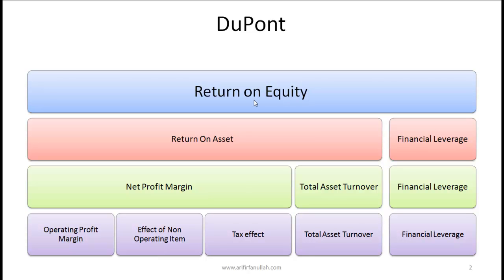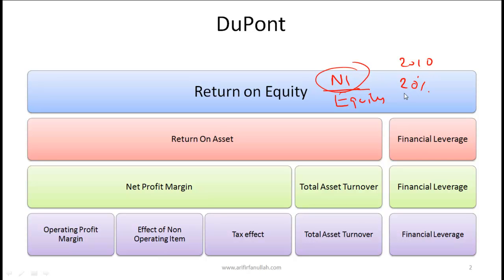Return on equity is net income divided by equity — the net income for a given year divided by either the average equity or beginning-of-year equity. The whole point of the DuPont equation is to examine this return on equity number. For example, if a company's ROE in 2010 is 20%, DuPont analysis helps us figure out where that return is coming from — whether from efficiency or from high leverage reducing equity.